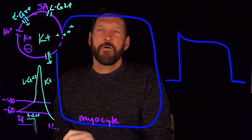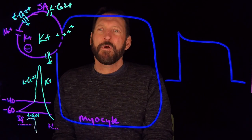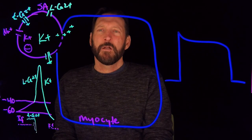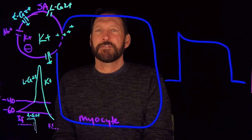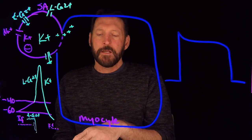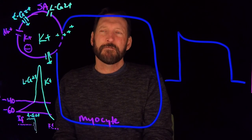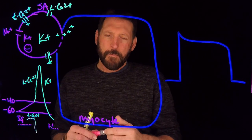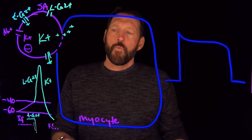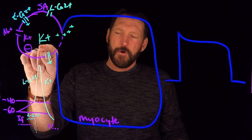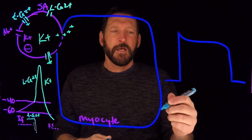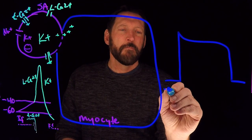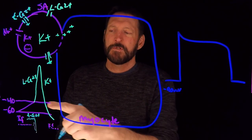The SA node spontaneously depolarizes at about 100 times per minute. Your heart doesn't beat that fast because you downwardly modulate it through the vagus nerve and the release of acetylcholine. Now turning to the myocyte: while the SA node was spontaneously depolarizing, the myocyte was at rest at approximately negative 90 millivolts, compared to the SA node's negative 60 millivolts.